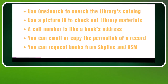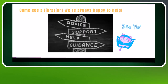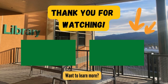To review: use OneSearch to search the library's catalog. Use a picture ID to check out library materials. A call number is like a book's address. You can email or copy the permalink of a record. You can request books from Skyline and CSM. And remember, if you still have questions, come see a librarian — we're always happy to help. Thanks for joining us.